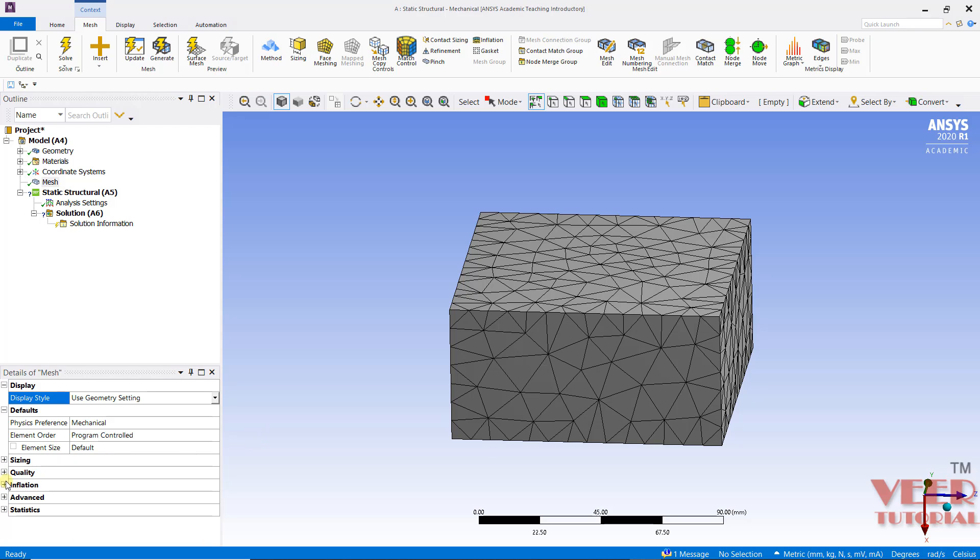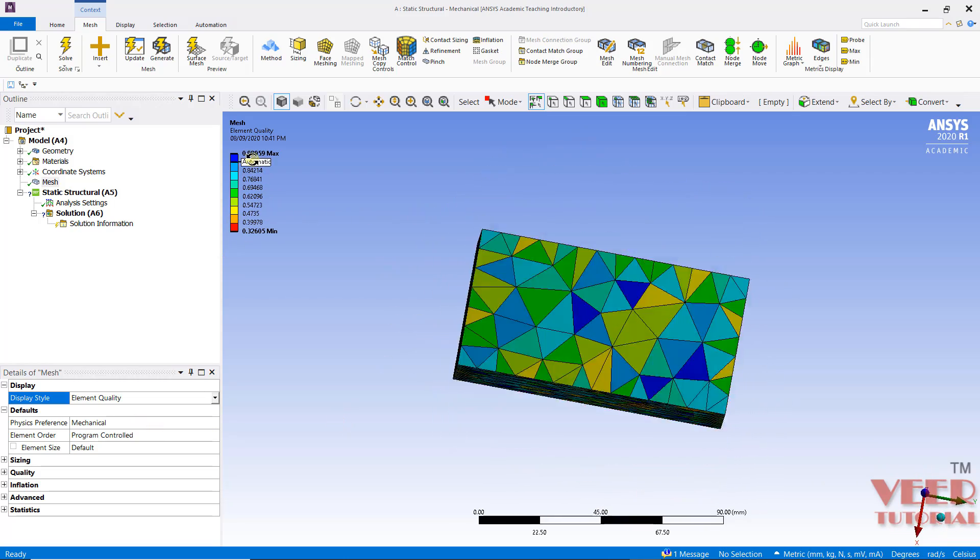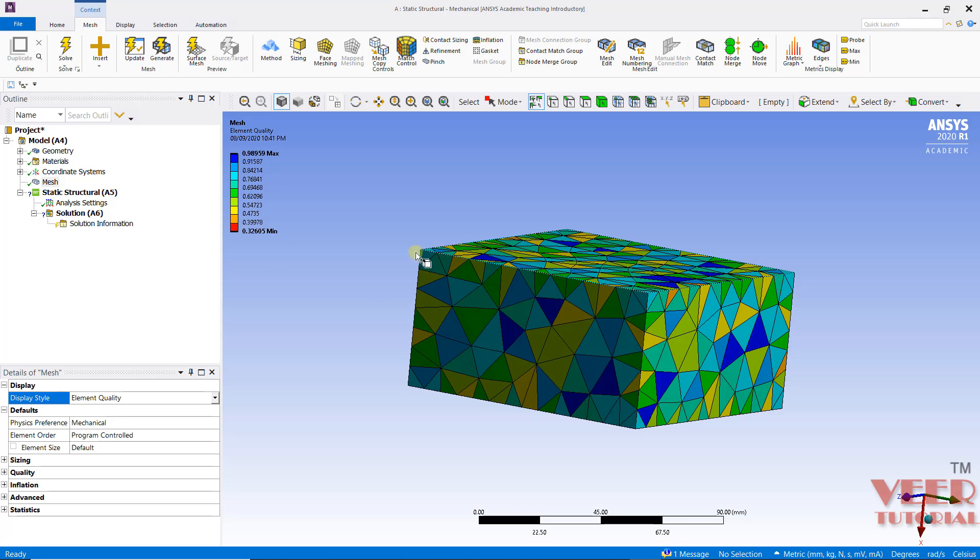And if we go to this, I will select element quality. So here you can see all the elements has been changed with respect to the element quality.